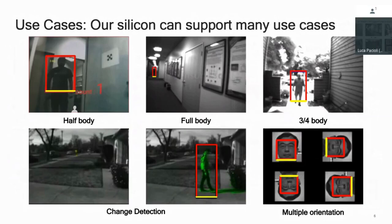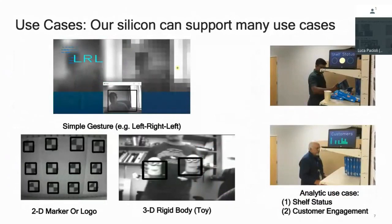We can run other algorithms with a conjunction of hardware and software. For example, change detection — we can look at a scene and see when changes occurred, and on those images further process the image, or on that specific area further process the image. We have other use cases where we could do simple gestures — simple left, right, or a box gesture — done with a combination of software and hardware acceleration. We could also detect a lot of 2D markers and logos. And we could detect a bunch of 3D rigid bodies — for example, toys. Both of those models were rather easy to train and they're quite compact, especially compared to a body or a face model.